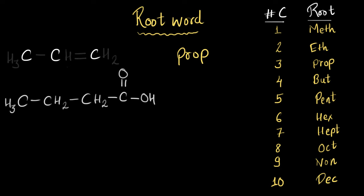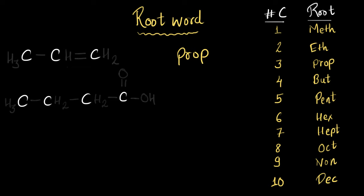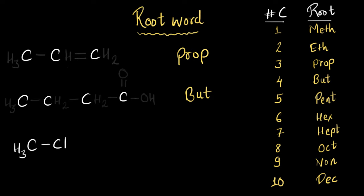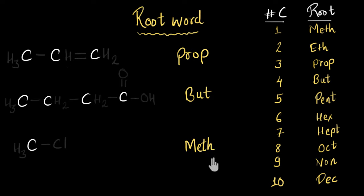Similarly, if this was the molecule you had to name — can you pause and write down the root word for this one? If I just focus on the carbon atoms, I see four of them. So for four, we use the root word 'but'. Let's do one more. For this one, this 'C' was for chlorine, not carbon. There is only one carbon atom in this molecule, so to denote one carbon, we use the root word 'meth'. This is how we give root words to all carbon compounds.